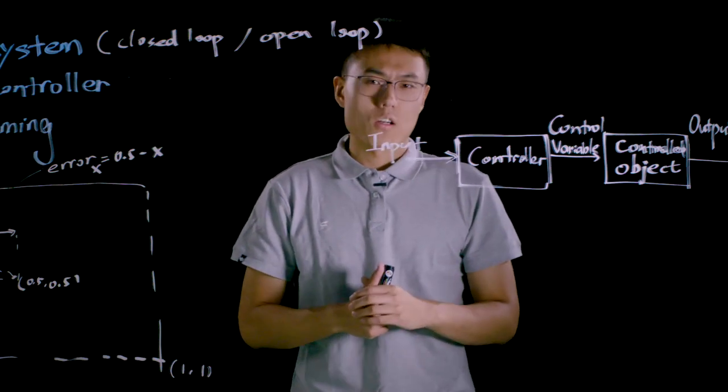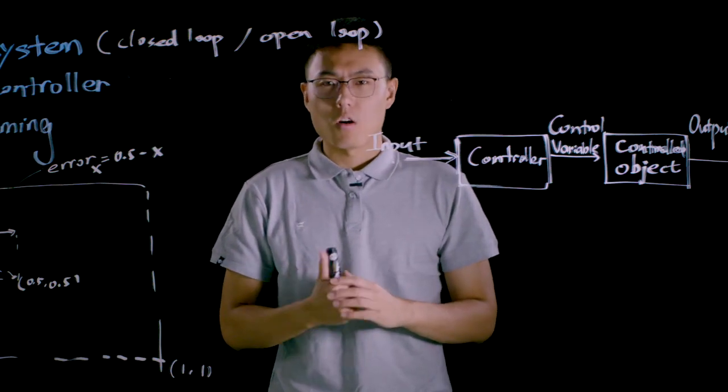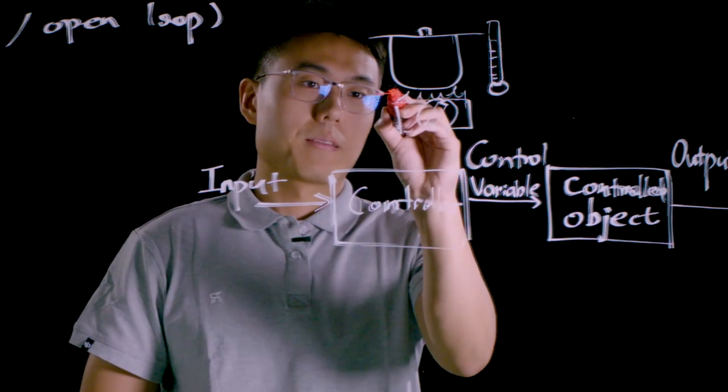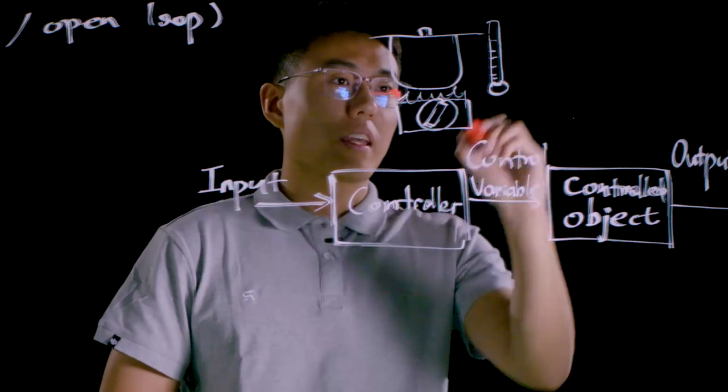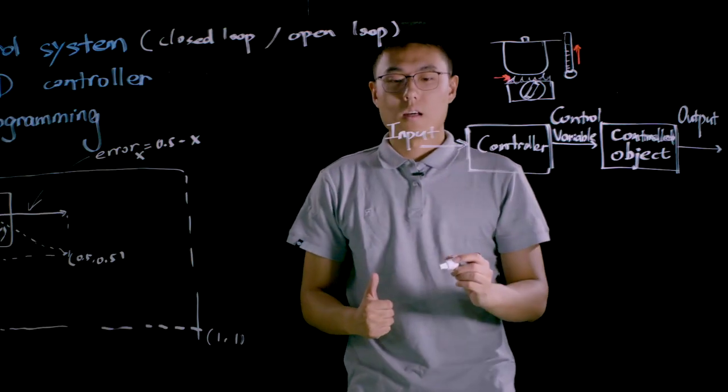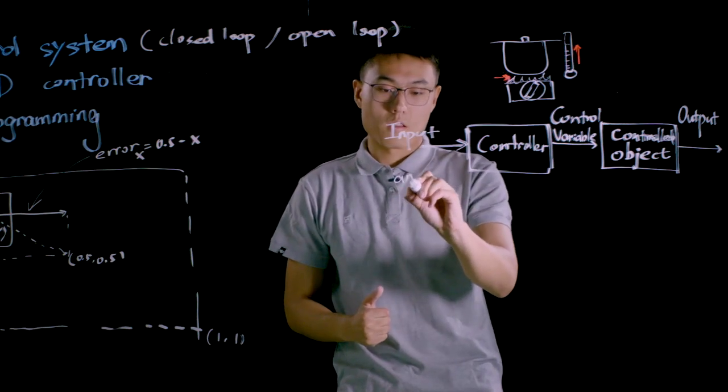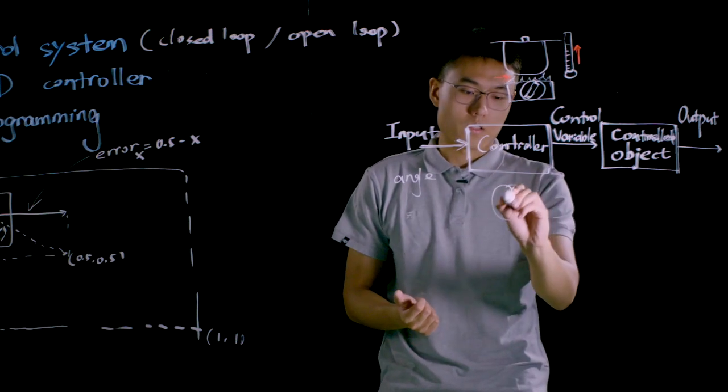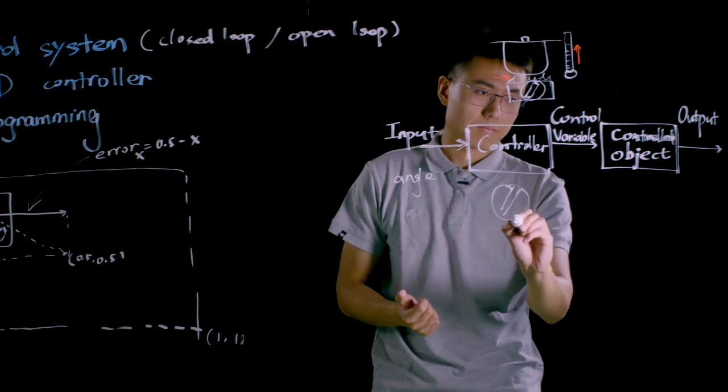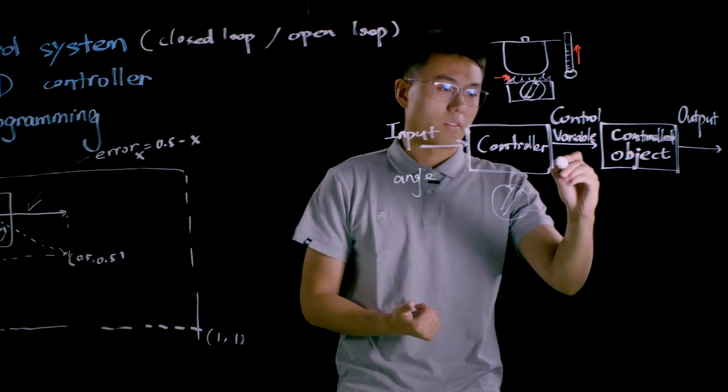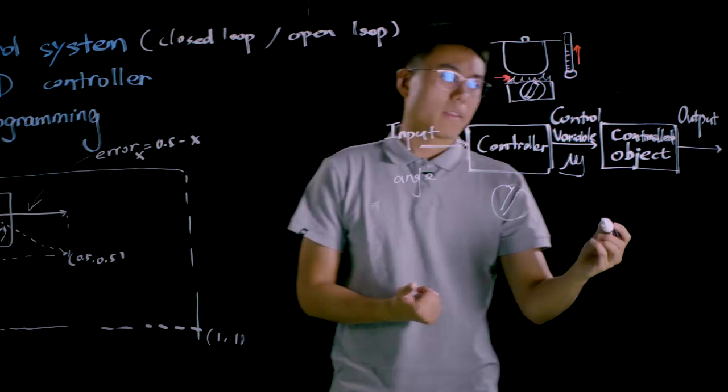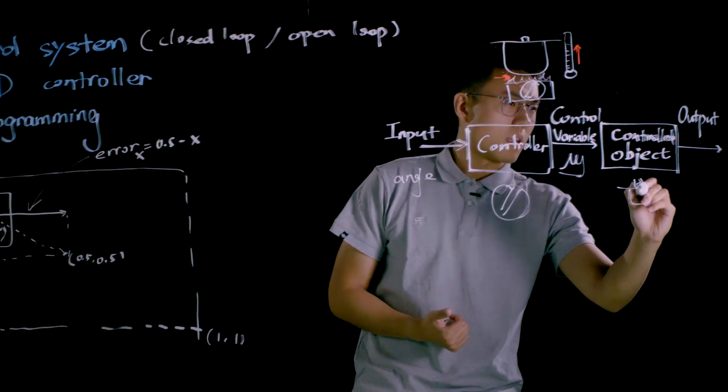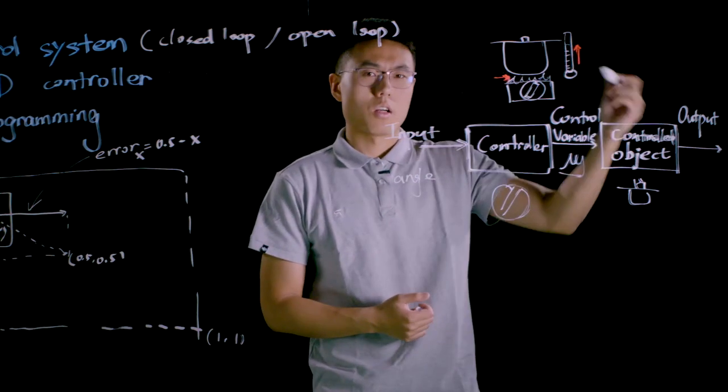In our daily life, gas stove and a pot form a typical open loop system. When we turn on the valve of the gas stove to produce flame, we start to heat the pot. So in this example, the input is the angle of rotation of the valve and obviously the controller is the valve itself. The control variable is the flame and the control object is the pot. And the final output is the temperature of the pot.